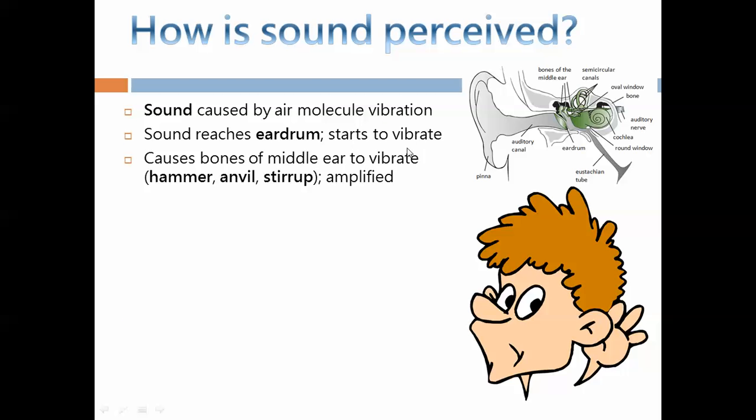This transfers the vibrations to these bones of the middle ear, the hammer, anvil, and stirrup. As a result, those vibrations are amplified. If you look at a sound wave on an oscilloscope, amplification means you're basically changing the height of these vibrations.